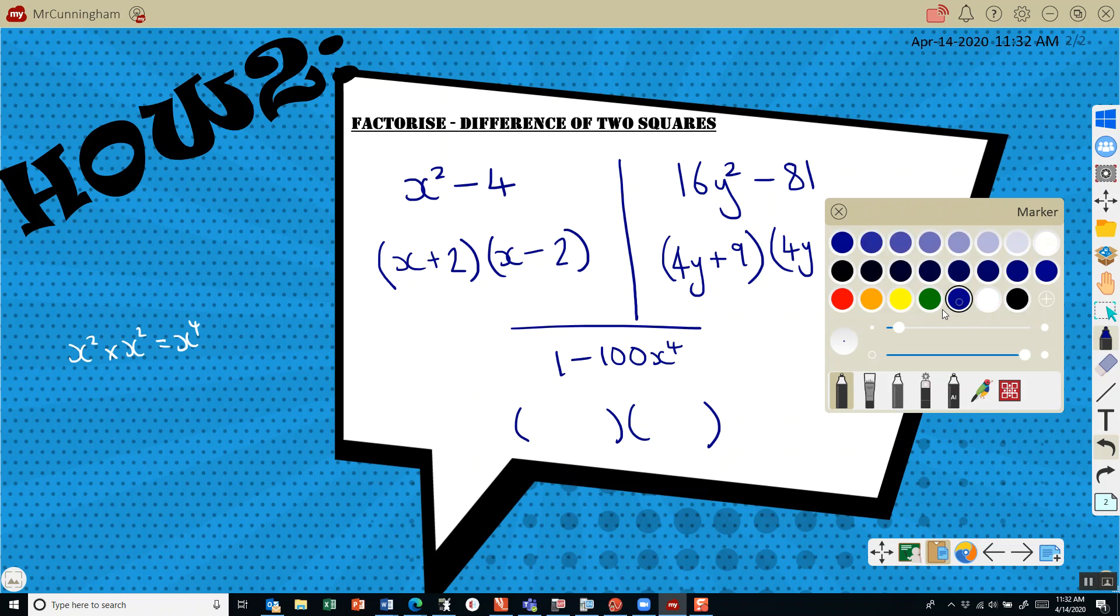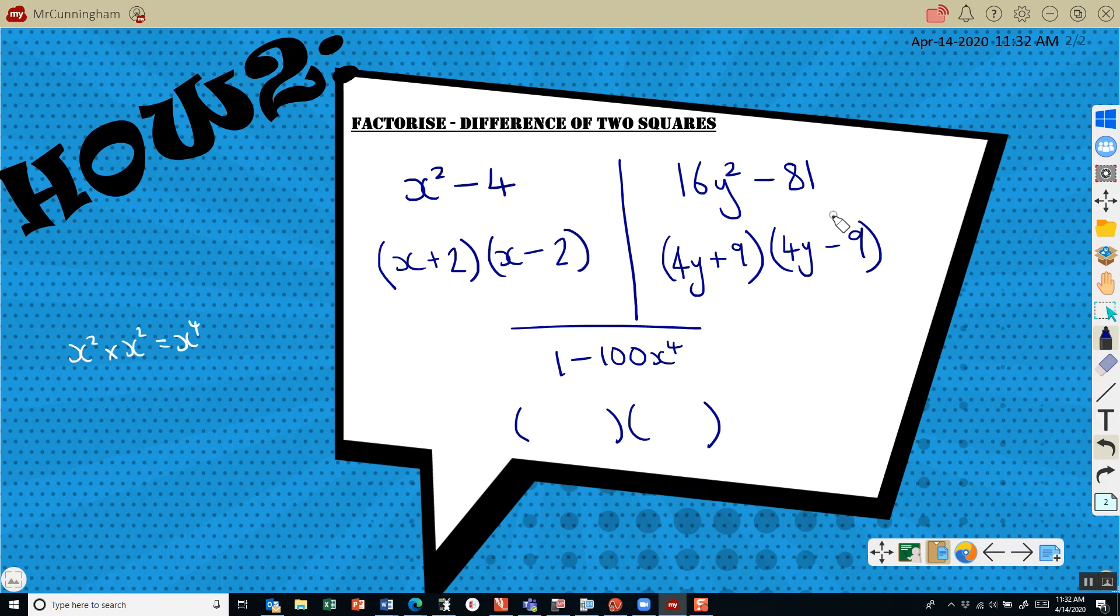And are we finding the difference between these? Yes, we are subtracting them. So what two things multiply together to give 1 that are the same? Yep, 1 times 1. What two numbers that are the same multiply together to give x to the 4? That would be x squared. And we have a plus and a minus, and we are done. If you have any questions, please ask.